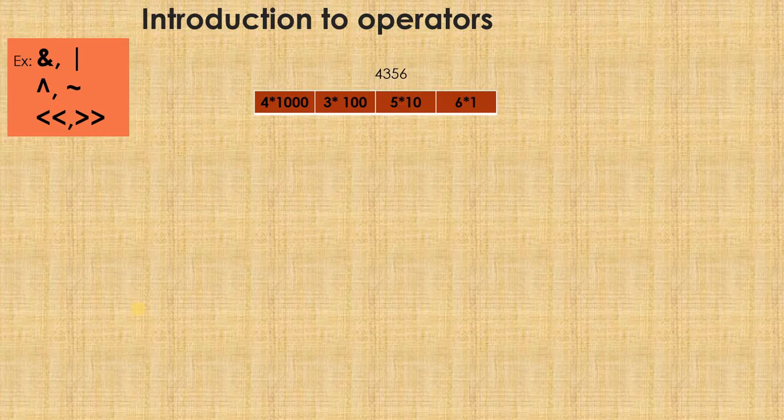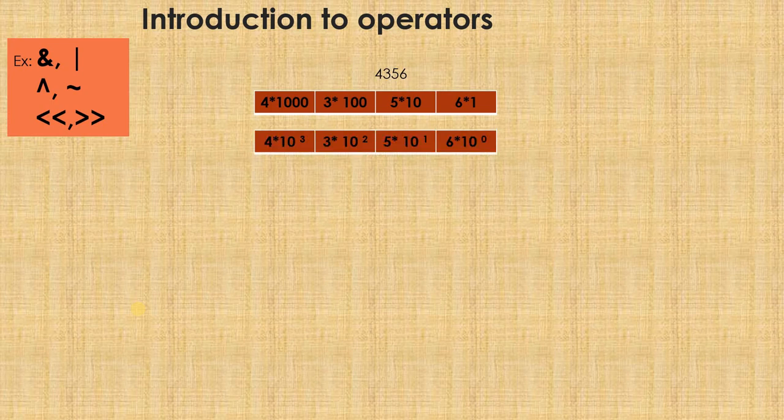Together it forms 4356. Or the other way I can write is: 4 into 10 raised to 3, 3 into 10 raised to 2, 5 into 10 raised to 1, and 6 into 10 raised to 0 — anything raised to 0 is always equal to 1, so it becomes 6 into 1. If one more number is added, say I put some number in the 10,000 place — say if I put 5, then it becomes 5 into 10 raised to 4. Like this, the number starts growing.